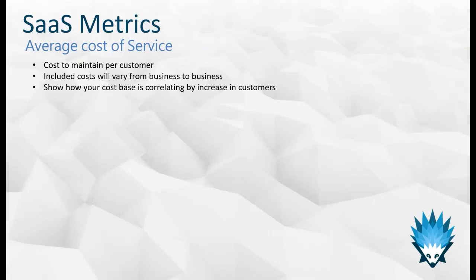The second SaaS metric is average cost of service — working out how much it costs to maintain each customer within your client base. The costs included here will vary from business to business and involve cultural decisions, for example whether account management is an ongoing cost of serving customers or a sales function. The main advice is to be consistent with this metric — don't move costs in and out between sections. It also shows how your cost base correlates with increases in customers: if you doubled consumption and licenses, would you need twice the level of support? You'd also hope to see economies of scale efficiencies.